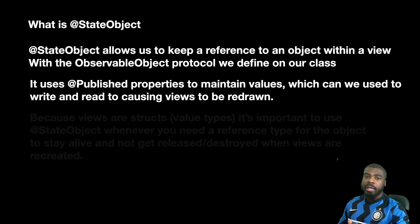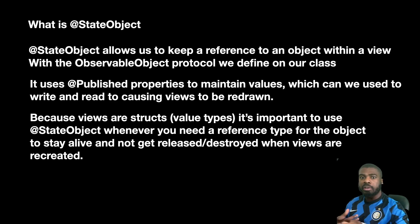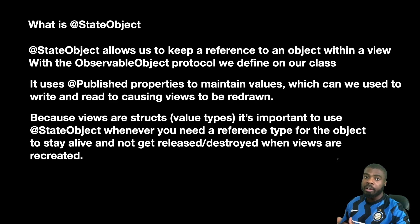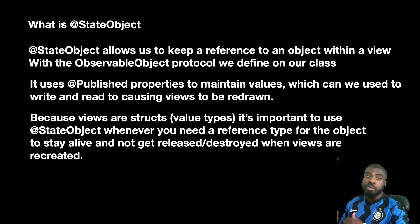Now why do we do this? Essentially, views in SwiftUI are structs. If you don't know the difference between a struct and a class: a class is a reference type, meaning once you create it, it's in memory and you can reference it later. Structs are value types — whenever you create a struct and make a change to it, it creates a copy, a new version of itself.